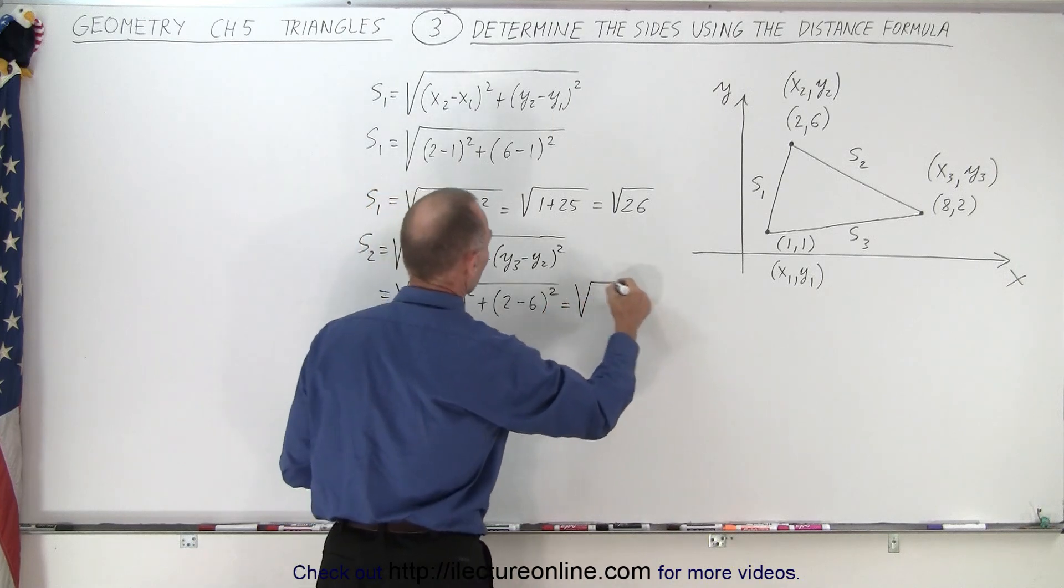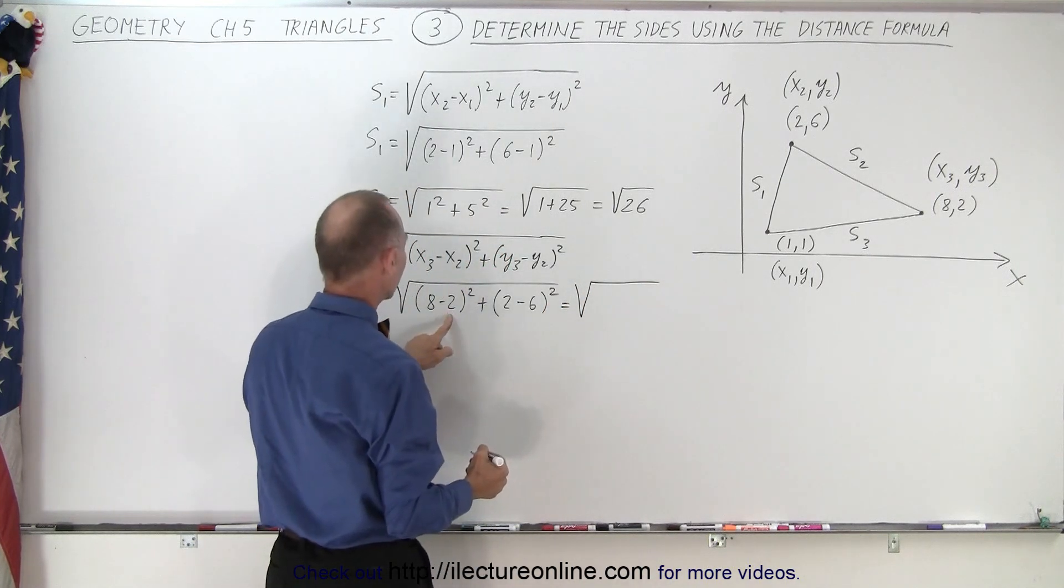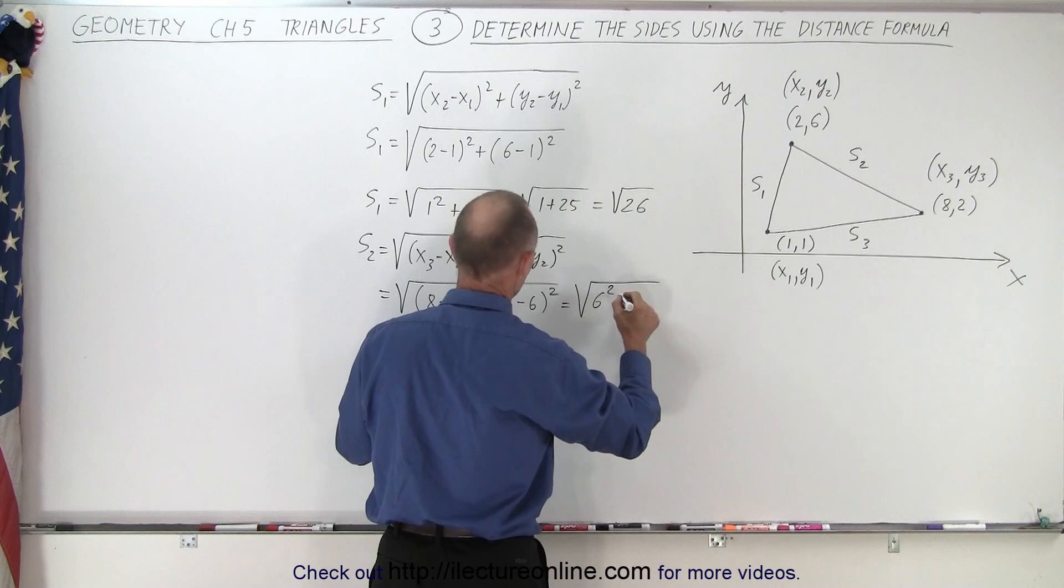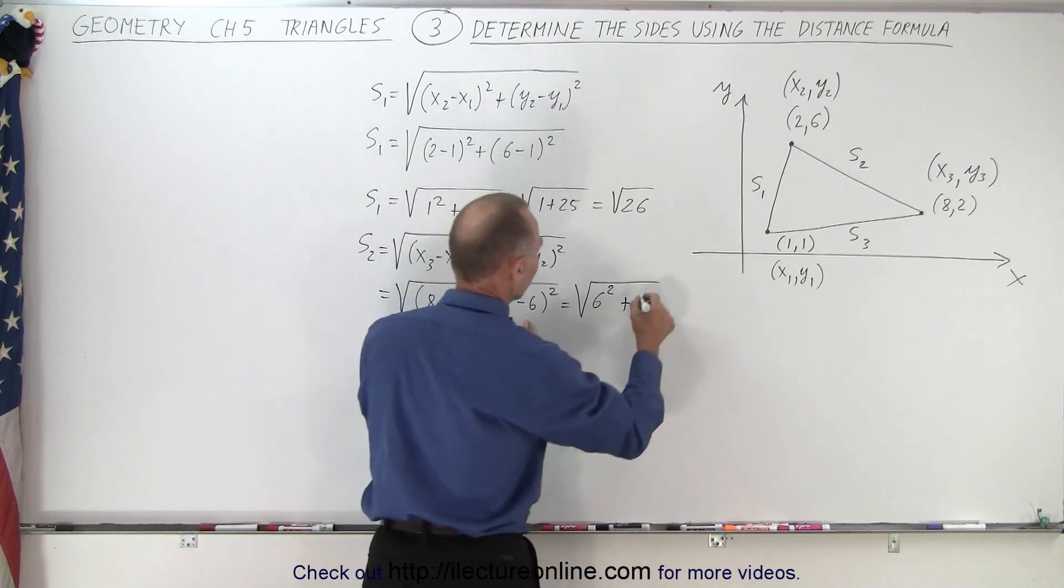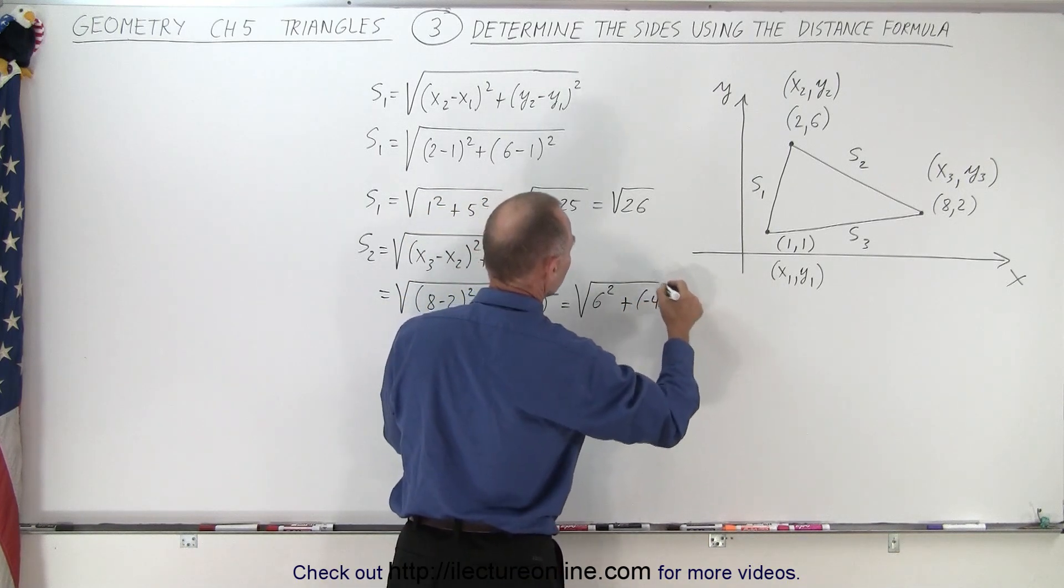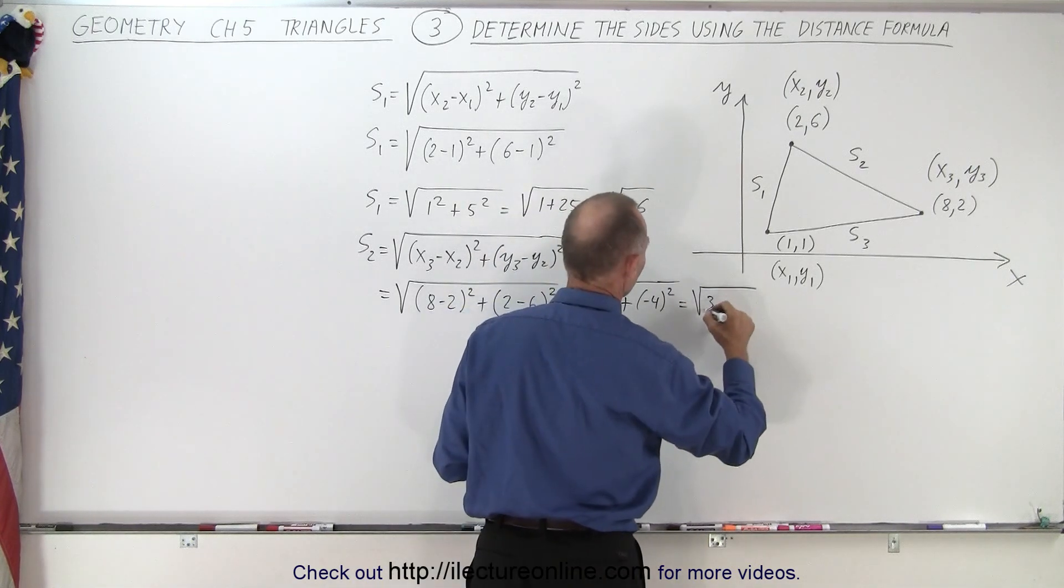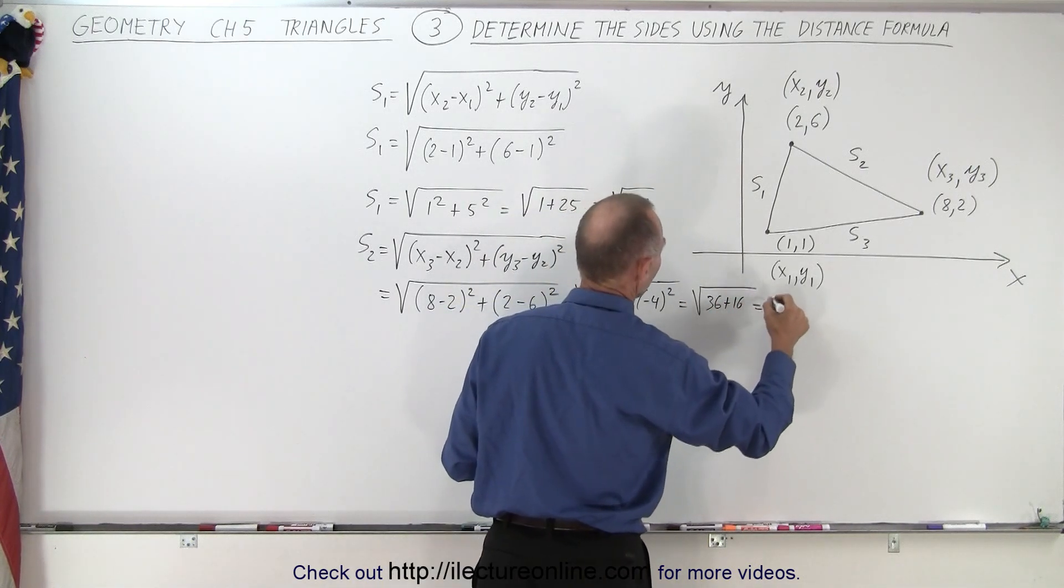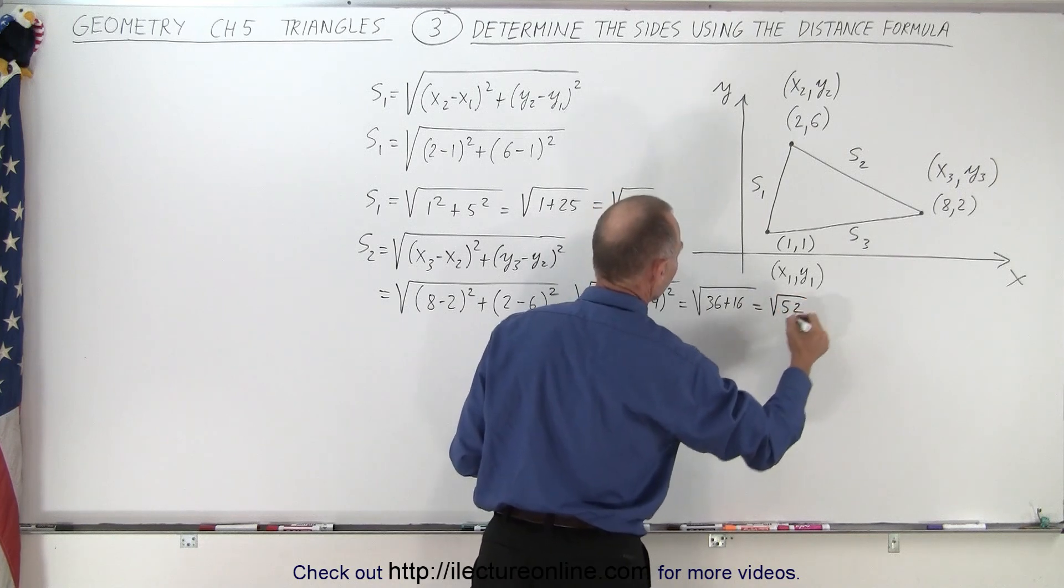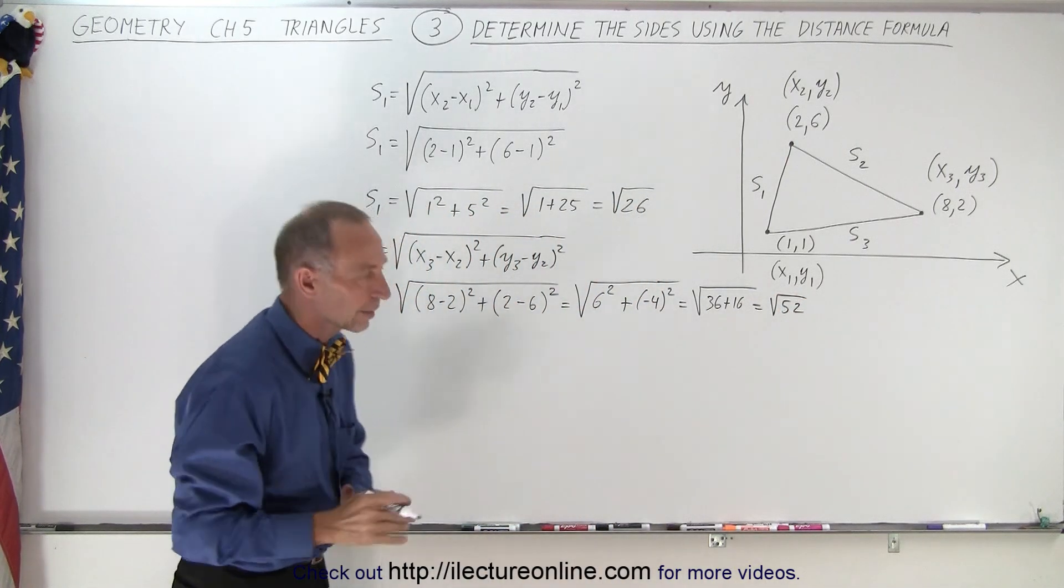So this is equal to the square root of 8 minus 2 is 6, that would be 6 squared, plus 2 minus 6 which is minus 4 squared. And so this is equal to the square root of 36 plus 16, which is equal to the square root of 52, so it would be slightly bigger than 7.